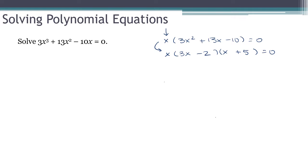Now I'm set up. I'm ready to use my zero product rule. So I'm going to set the factors equal to zero. x plus 5 is a factor. 3x minus 2 is a factor. And so is the x.